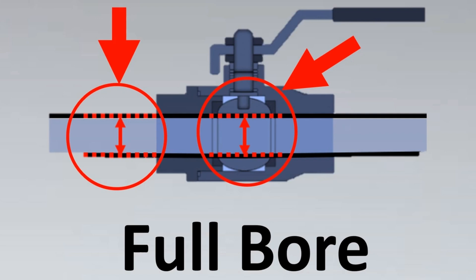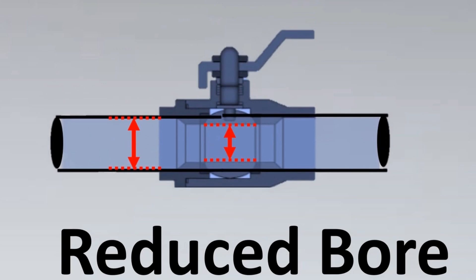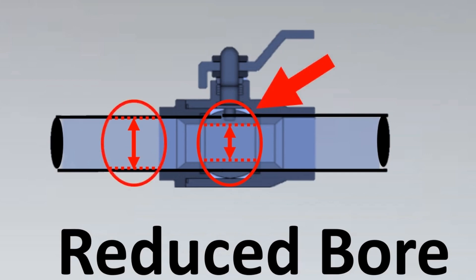A reduced bore valve is similar, except that the internal passage of the valve where the fluid passes is smaller than the line size. Since it is reduced compared to the line size, the term 'reduced bore valve' is used.